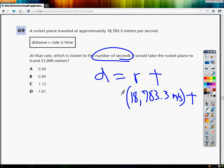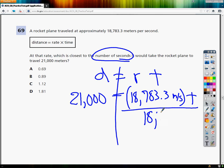Times T is equal to the distance, which is 21,000 meters. Now, all I'm going to do is solve for T. It's 18,783.3 times T, so in order to get rid of it, I need to divide by 18,783.3 on both sides.